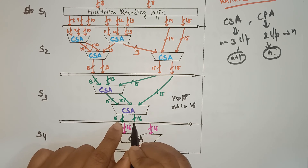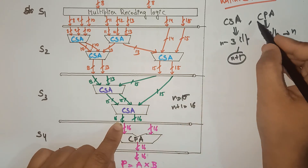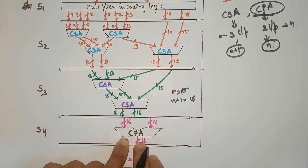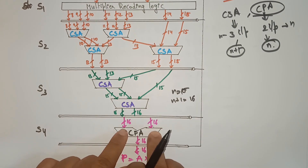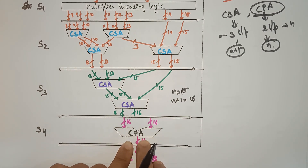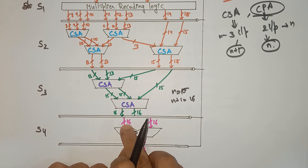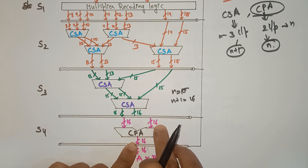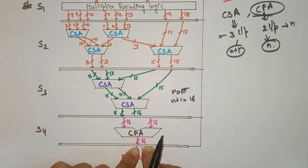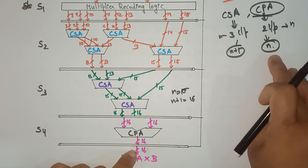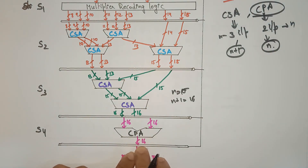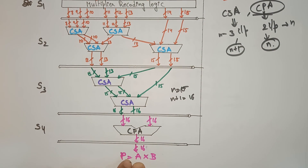Now there are only two inputs — a 16-bit carry vector and a 16-bit bitwise sum. Whenever there are only two inputs, we use the carry propagation adder. In the carry propagation adder, if the input is 16 bits, the output is also 16 bits. So the final output is 16 bits.